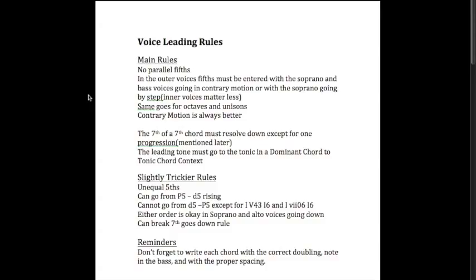The first main rule is that there are no parallel fifths. Parallelism is when between the same voices you have the same interval of the same quality consecutively. So parallel fifths in a four-voice texture means between two voices you have a perfect fifth or diminished fifth consecutively that is moving. For example, if you have an A and an E between the tenor and soprano, then a B and an F-sharp between the tenor and soprano, that's parallel fifths because they're both perfect fifths and they're consecutive. However, if you had an A and an E in the soprano and then another A and E in the soprano, it's not parallel fifths because they're not moving.